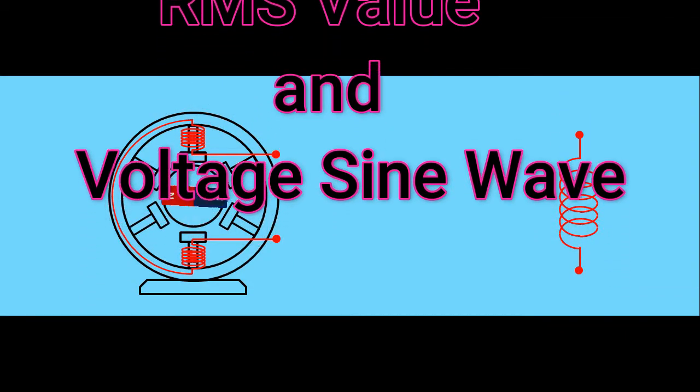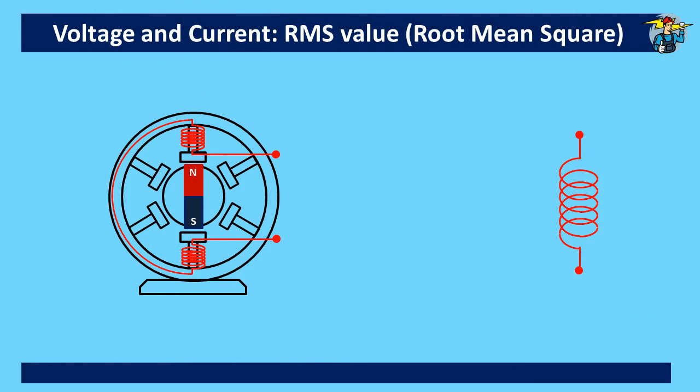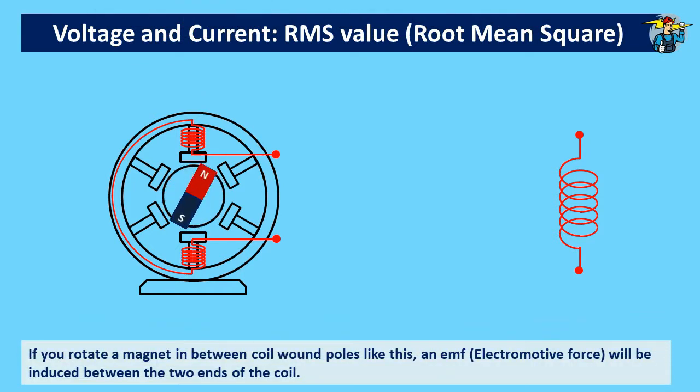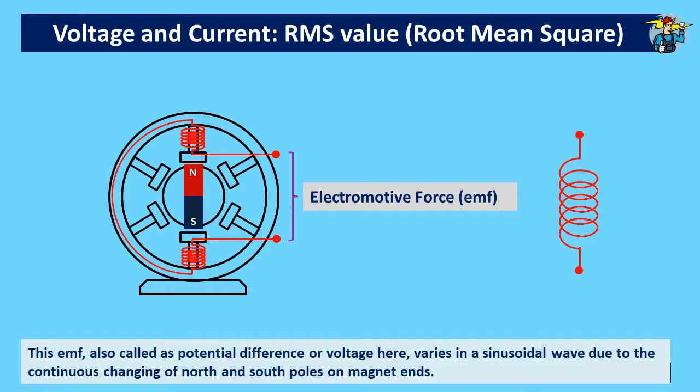Good day to everyone. I thought of discussing the RMS value and the sinusoidal waveform of voltage today. If you rotate a magnet in between coil wound poles like this, an electromotive force (EMF) will be induced between the two ends of the coil. This EMF, also called potential difference or voltage, varies in...